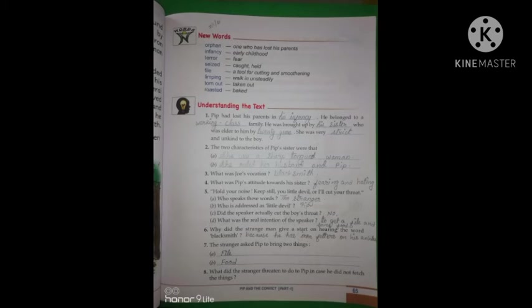Now, come to the next question. Why did the strange man give a start on hearing the word blacksmith? Yes, the strange man gave a start on hearing the word blacksmith because he was wearing iron fetters or he has iron fetters on his ankles.